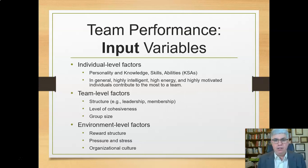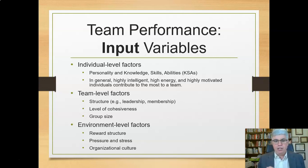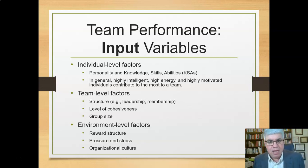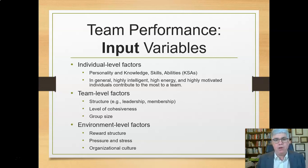Let's start with the first box — the factors that impact team performance or team effectiveness. You have individual-level factors: the personality, knowledge, skills, and abilities of each of the team members. That's what they bring to the group, and perhaps why they're selected. In general, highly intelligent, high-energy, and highly motivated individuals contribute the most to the team — they're able to do the most work, communicate the most, and figure out the most problems.